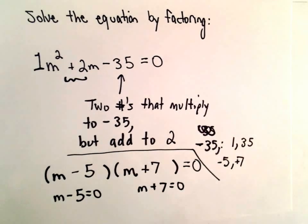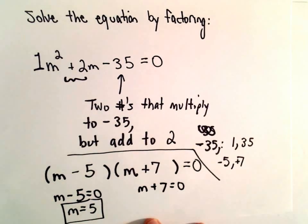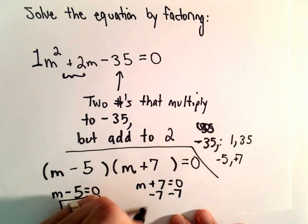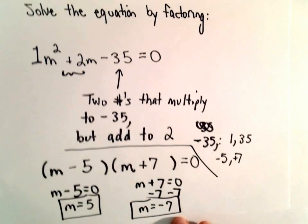So the first equation, we can simply add 5 to both sides. We'll get m equals 5. And if we subtract 7 from the second equation, we'll simply get m equals negative 7. And that will be our other solution.